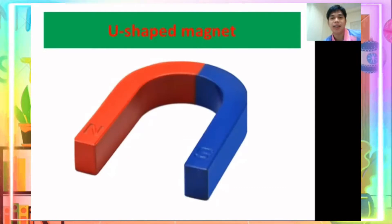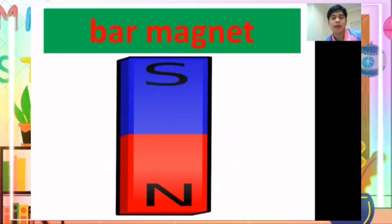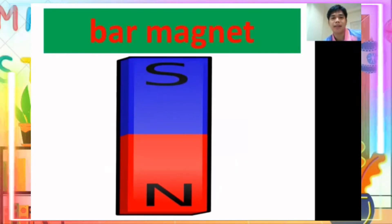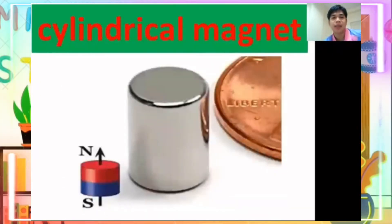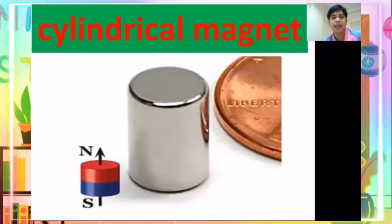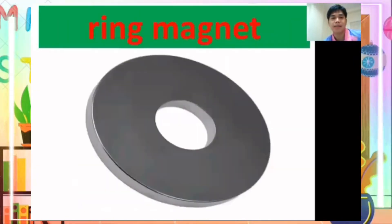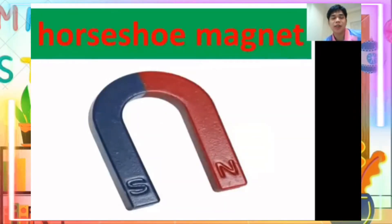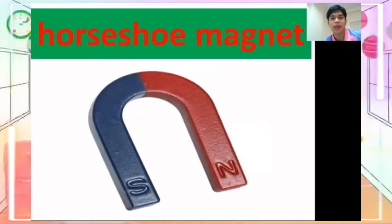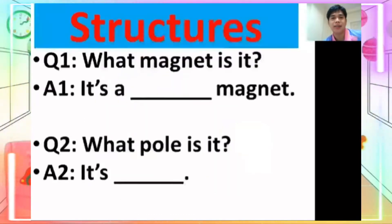U-shape magnet — U, S, H, A, P, E, M, A, G, N, E, T. Bar magnet — B, A, R, M, A, G, N, E, T. Circular magnet — C, I, R, C, U, L, A, R, M, A, G, N, E, T. Cylindrical magnet — C, Y, L, I, N, D, R, I, C, A, L, M, A, G, N, E, T. Ring magnet — R, I, N, G, M, A, G, N, E, T. Horseshoe magnet — H, O, R, S, E, S, H, O, E, M, A, G, N, E, T.